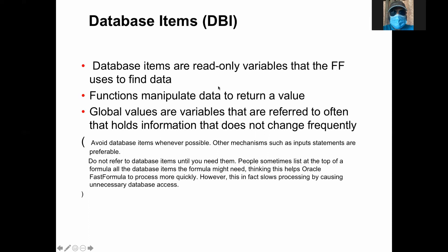Now, the database item: a database item is a read-only variable that Fast Formula uses to find data. It is read-only — you can't set the value. It is only the output coming from the tables. Database items can also sometimes come from functions, not necessarily always from column values. Sometimes they use max value, minimum value — these things come from functions. Sometimes global variables or system variables like system date are also used as database items. Now, avoid using the database item if you can get the information from the context or from an input value, because using the database item is a little bit expensive — it executes SQL to get the information.